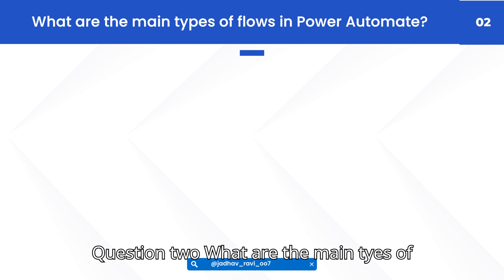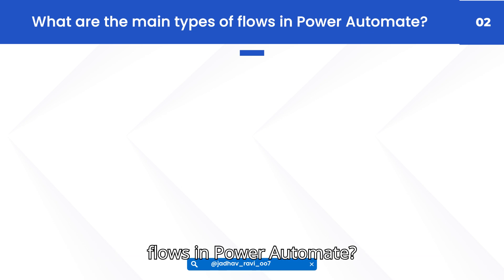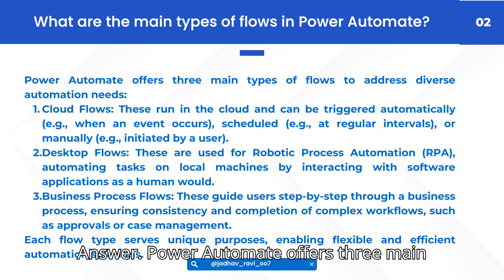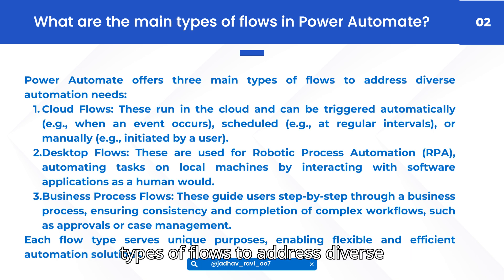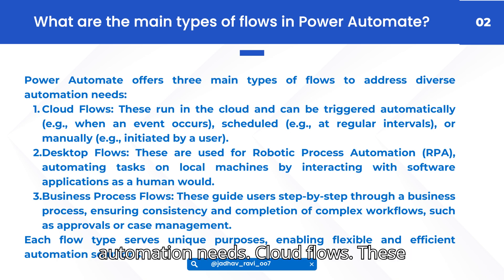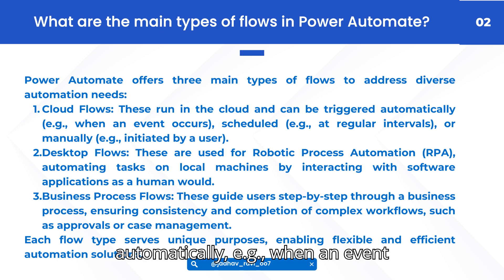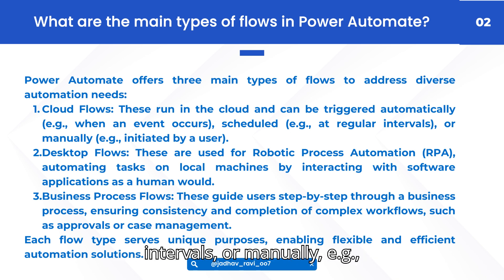Question 2: What are the main types of flows in Power Automate? Answer: Power Automate offers three main types of flows to address diverse automation needs. Cloud flows: these run in the cloud and can be triggered automatically, e.g., when an event occurs, scheduled at regular intervals, or manually initiated by a user.